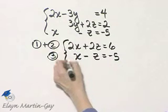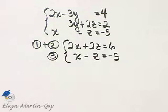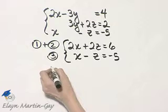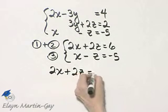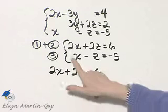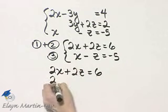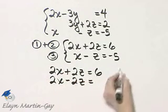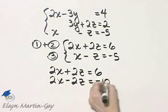Now treat this as a system of two equations in two unknowns and let's solve this system. To do so, I'll write the first equation down again, two x plus two z is equal to six. The second equation I'll multiply through by two. So two times x is two x minus two z is equal to two times negative five or negative ten.